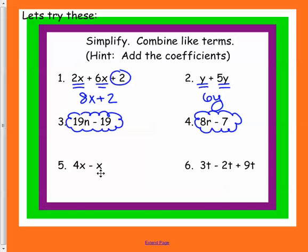Down here, we have 4x minus x. So think about 4x's being in front of you and you taking one away. This is a 1x, so we have 3x. Down here, we have 3t minus 2t plus 9t.